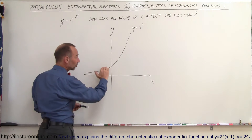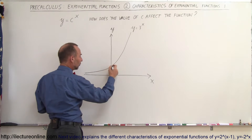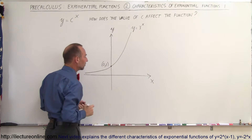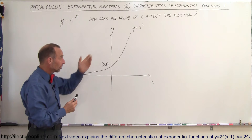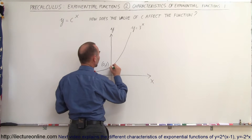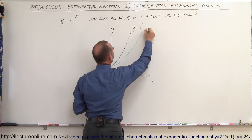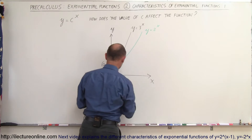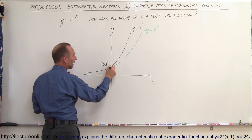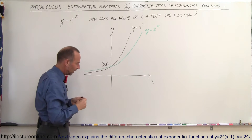What happens is the function will still cross the y-axis at y equals 1 — so the point (0, 1), where x equals 0 and y equals 1. When the base goes to 2, the function doesn't grow quite as fast. So y equals 2 to the x power looks like this, and on the other side it doesn't get smaller as quickly — it diminishes down to 0 not quite as fast.